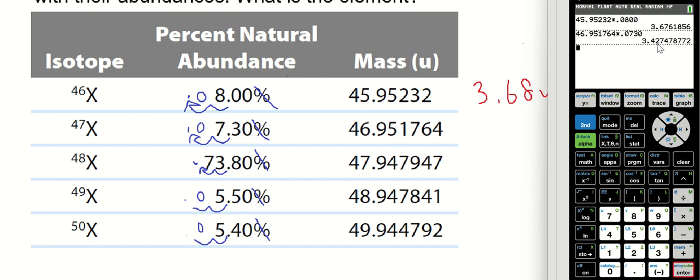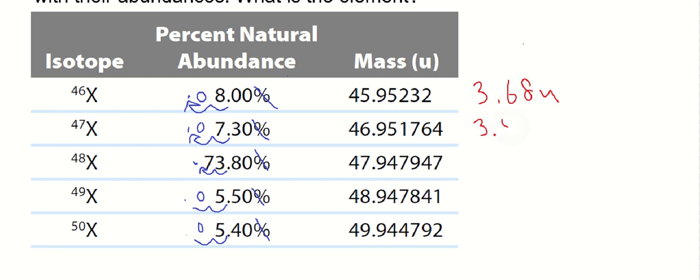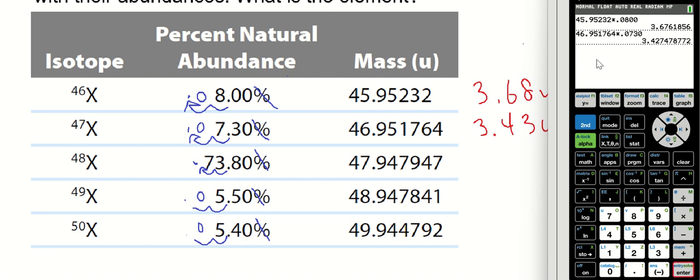All right, and X-48 has a mass of 47.947947 times 0.7380. This one's got four significant figures. Right, this one's going to contribute the greatest amount of mass because it makes up almost three-fourths—you know, it's almost 75% of all the isotopes of X is X-48. All right, so it's 35.39.